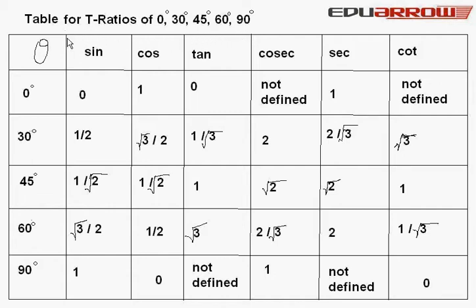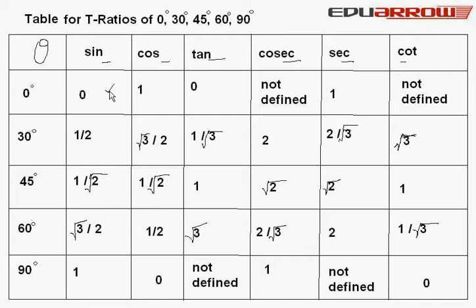This is the table of trigonometric ratios for the angles 0 degree, 30 degree, 45 degree, 60 degree, and 90 degree. This row represents the angles and this column represents the trigonometric ratios. The value of sin 0 degree is 0. Cos 0 degree is equal to 1. Tan 0 degree is equal to 0.